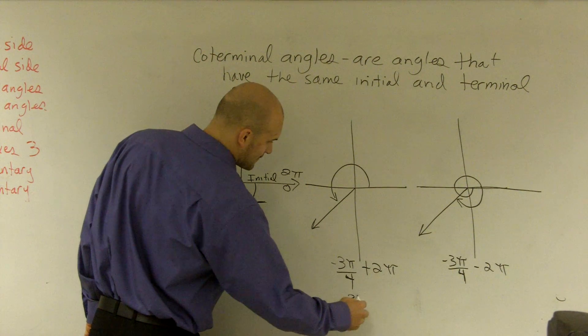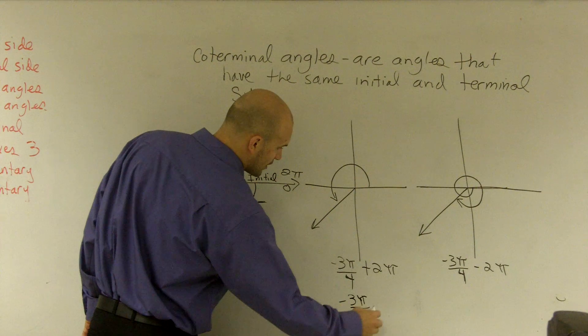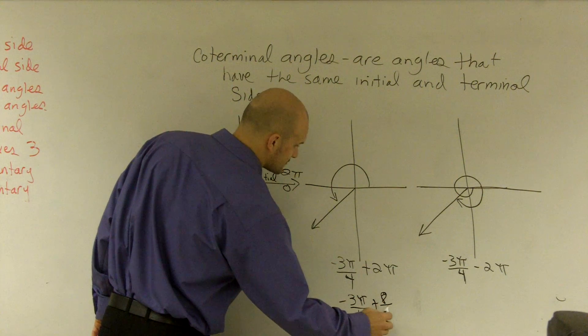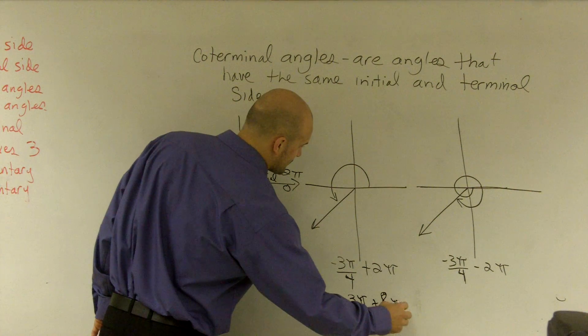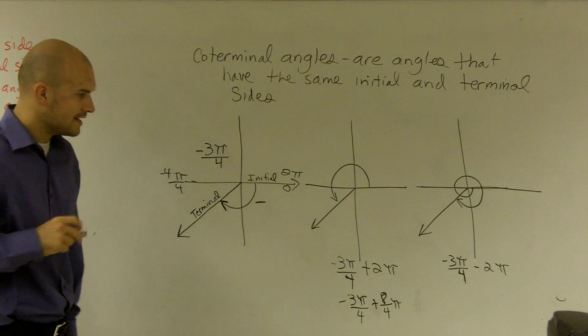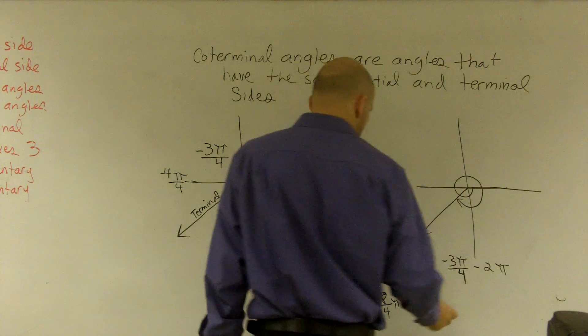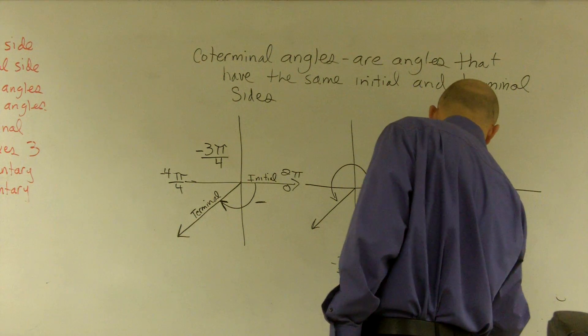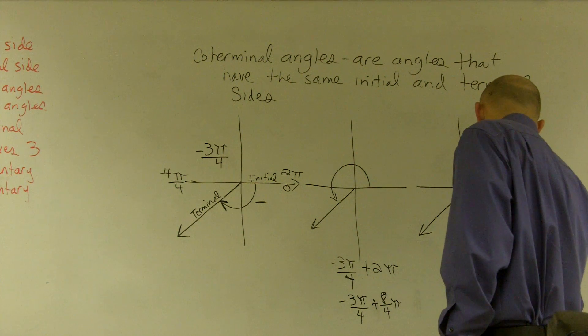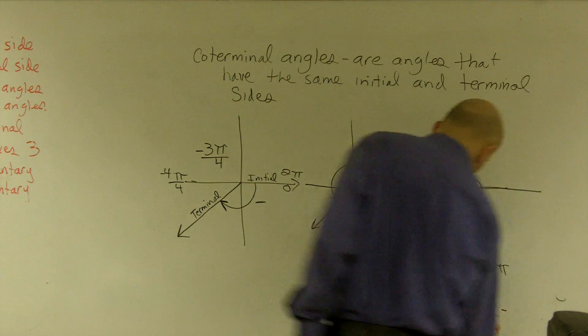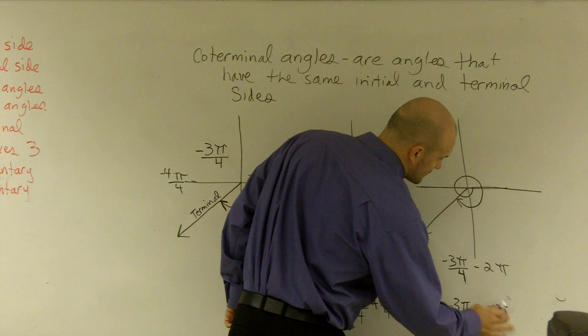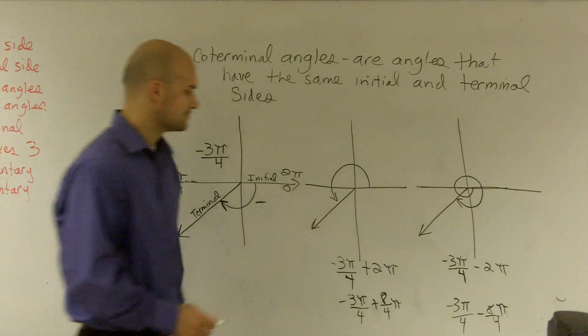So therefore, I have negative 3π over 4 plus 8 over 4π, right? And then from here, if I subtract them, I'm going to do the same thing. So we have negative 3π over 4 minus 8π over 4.